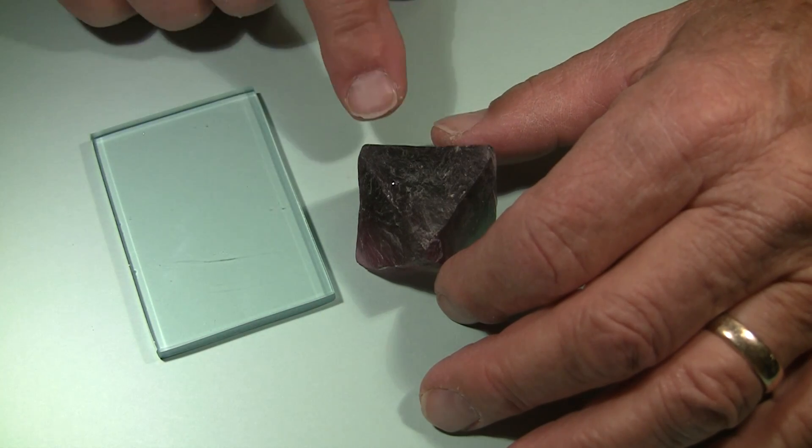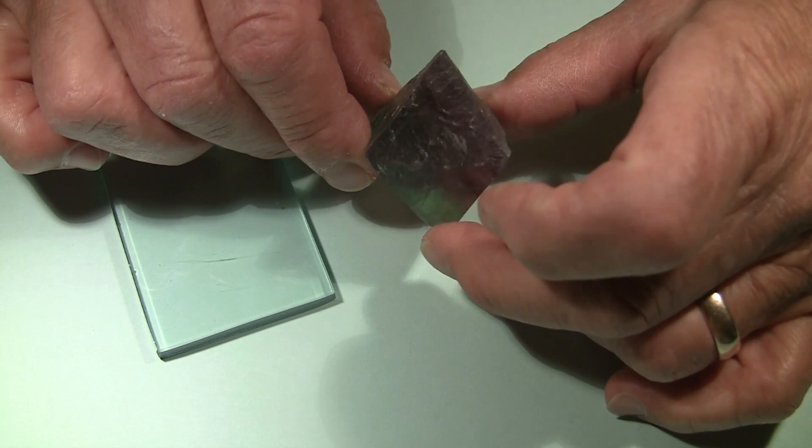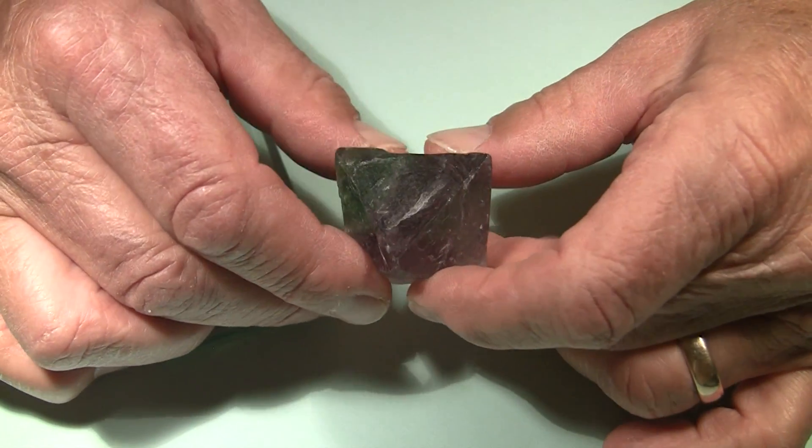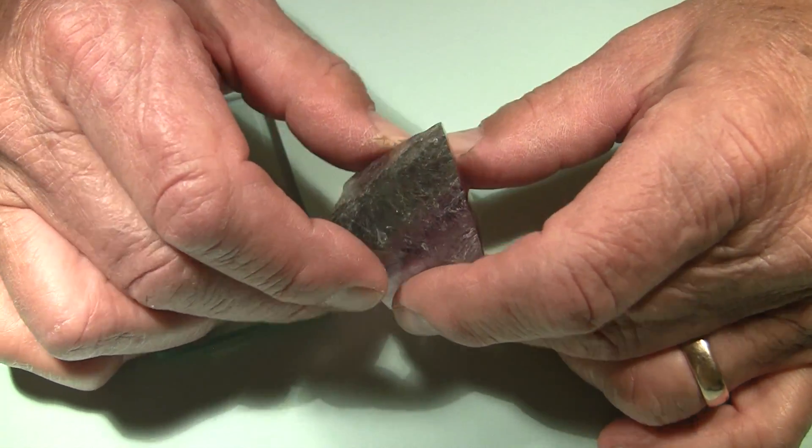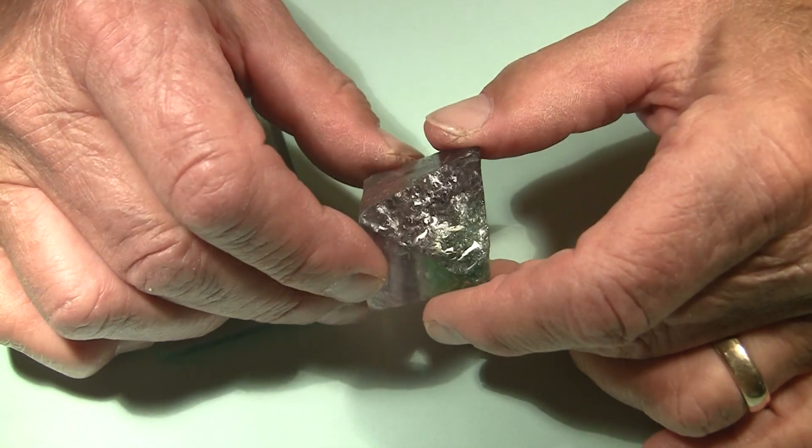This is the mineral fluorite. What we have here is what's called a cleavage octahedron. It has eight sides. Each side is an equilateral triangle, and there are eight of them. So this specimen has four directions of cleavage.